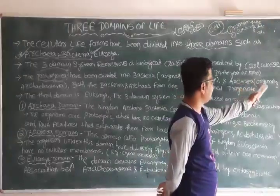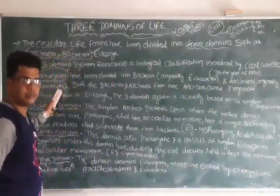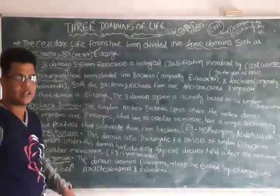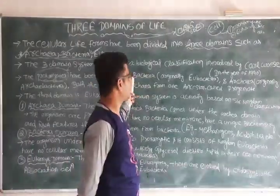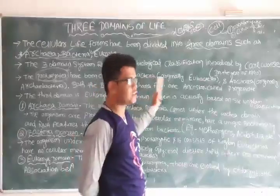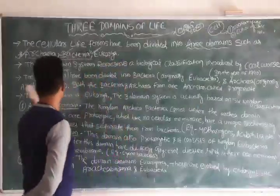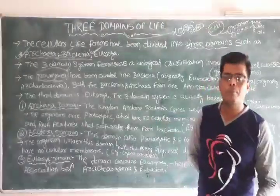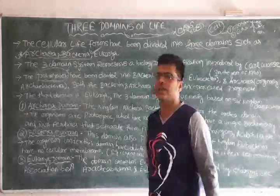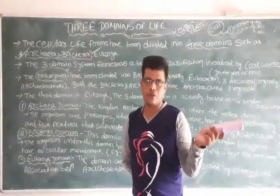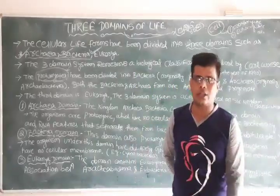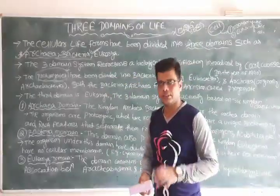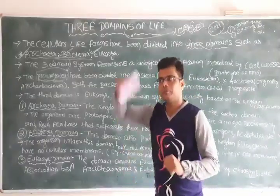Archaea is originally called Archaebacteria. The prokaryotic organisms have been divided into two parts: bacteria, originally called Eubacteria, and Archaea, originally called Archaebacteria. Both Archaea and bacteria come from one ancestor — what we call Purvopurushab in Odia. They are both derived from one common ancestor.